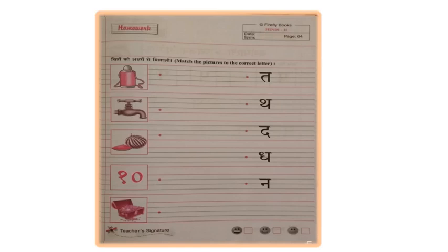What's the first picture you can see? There's a picture of a Tharmas, Tha Tha Tharmas. So, with which Vyanjan it will be joined?